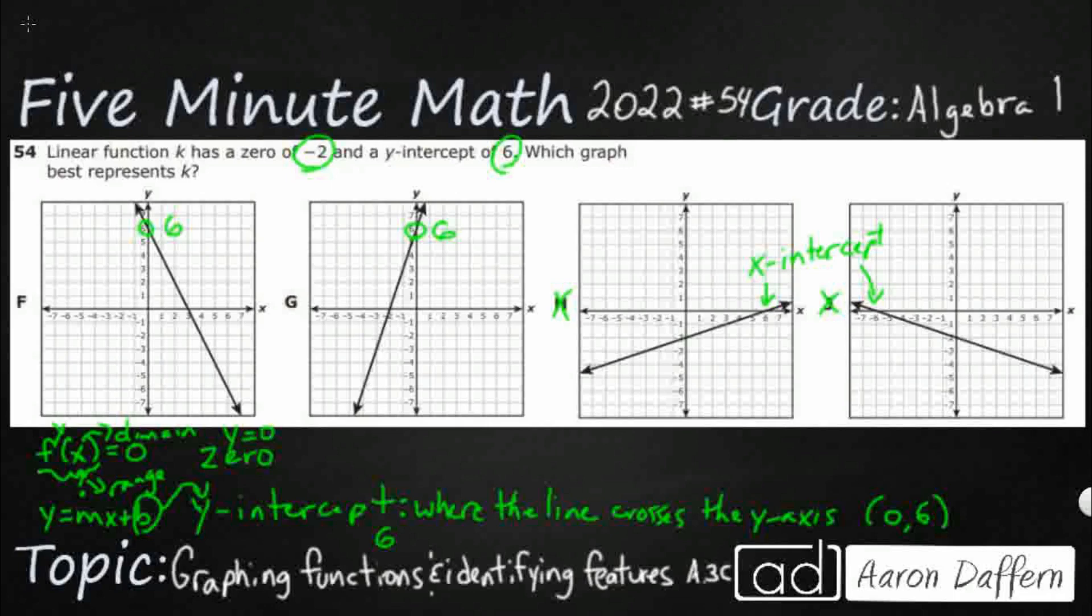Well, when y equals 0, guess what? You are right here on the x-axis. So the zero is another word for the x-intercept. Not sure why it has a separate name, but it just does. So it's the x-intercept.